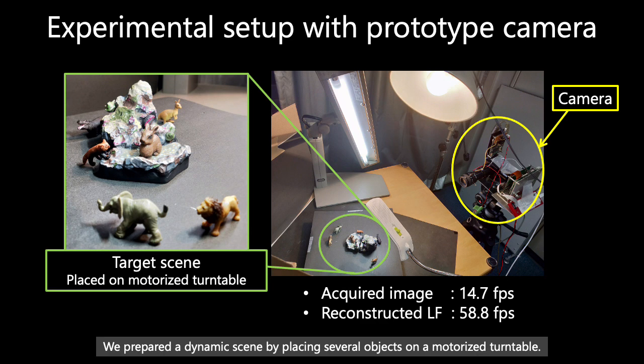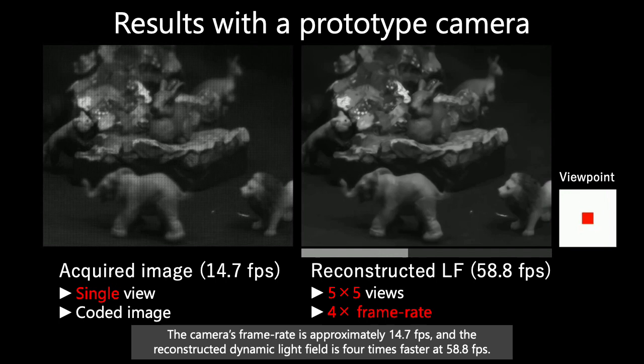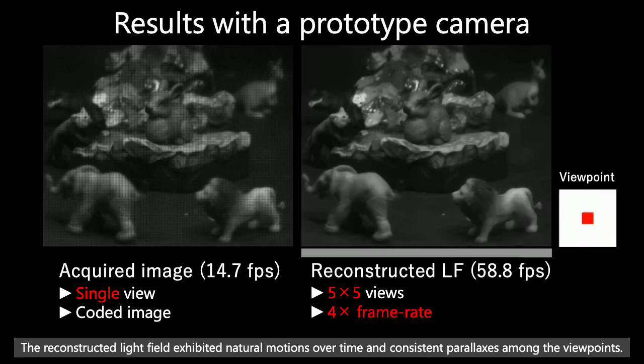We show the acquired images and reconstructed light field. The camera's frame rate is approximately 14.7 fps, and the reconstructed dynamic light field is 4 times faster at 58.8 fps. The reconstructed light field exhibited natural motions over time and consistent parallaxes among the viewpoints.